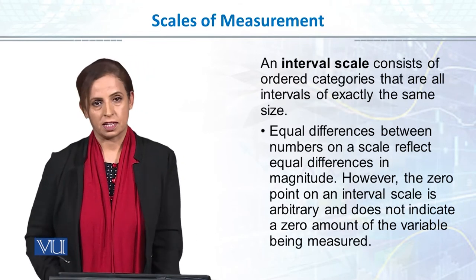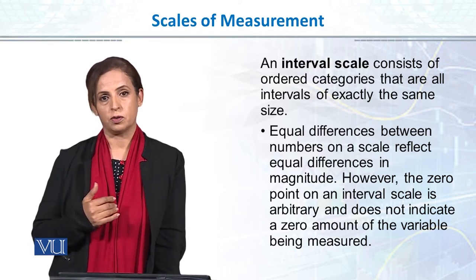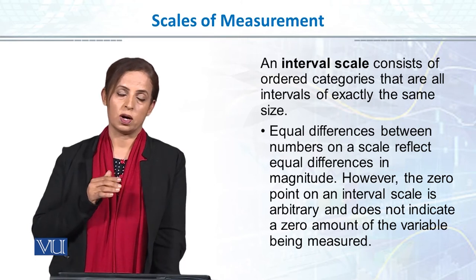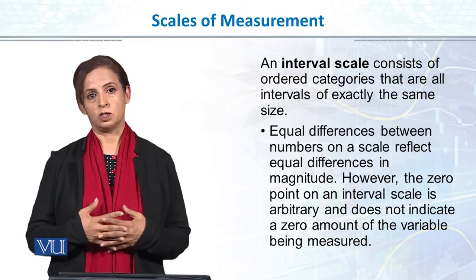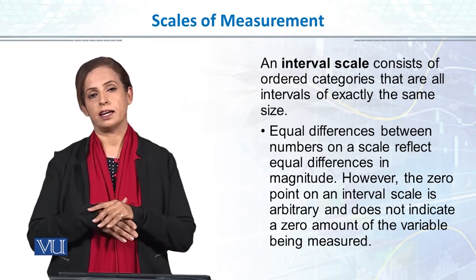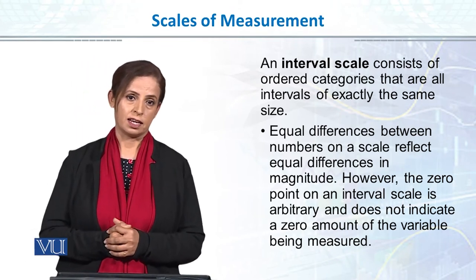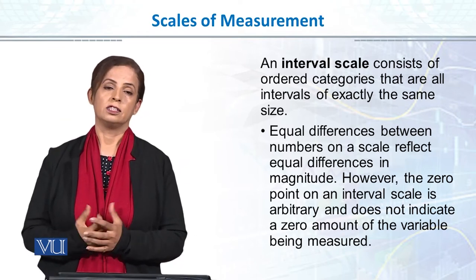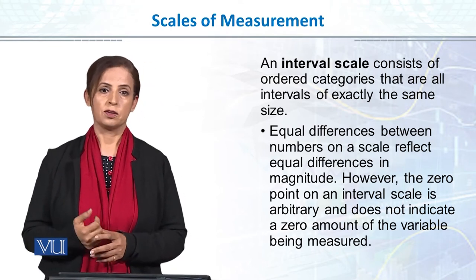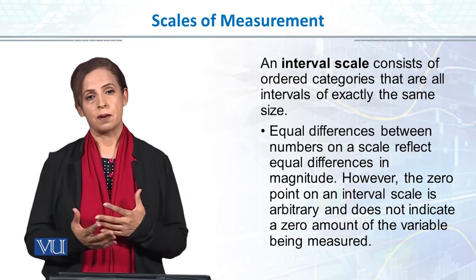The third scale is interval scale. Interval scale consists of ordered categories — it is a better scale than ordinal because there is a true quantitative value. The distance between 2 and 3 is the same as the distance between 7 and 8, and between 11 and 12. The interval between the numbers is equal. In psychology, most of the variables we are interested in — our independent and dependent variables — we measure them on interval scale because we use Likert scale, 7-point scale, 10-point scale. So our data is truly quantitative.